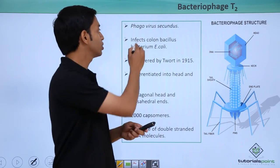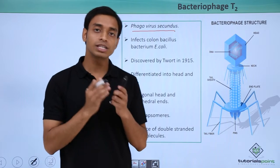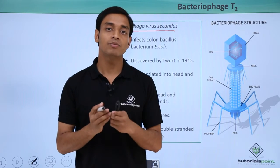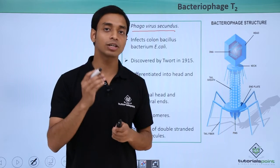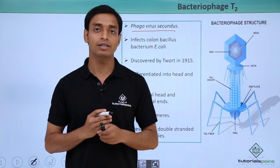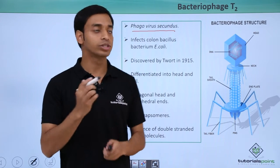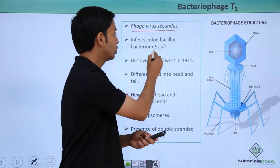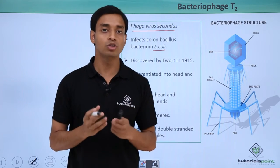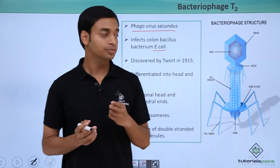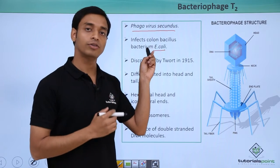Bacteriophage T2 has been given a scientific name which is Phagovirus secundus. These viruses are mostly coliform viruses because they infect the colon bacillus, or the very common bacterium E. coli, which is present in the gut of the human intestine. That is the reason they are known as coliform viruses.